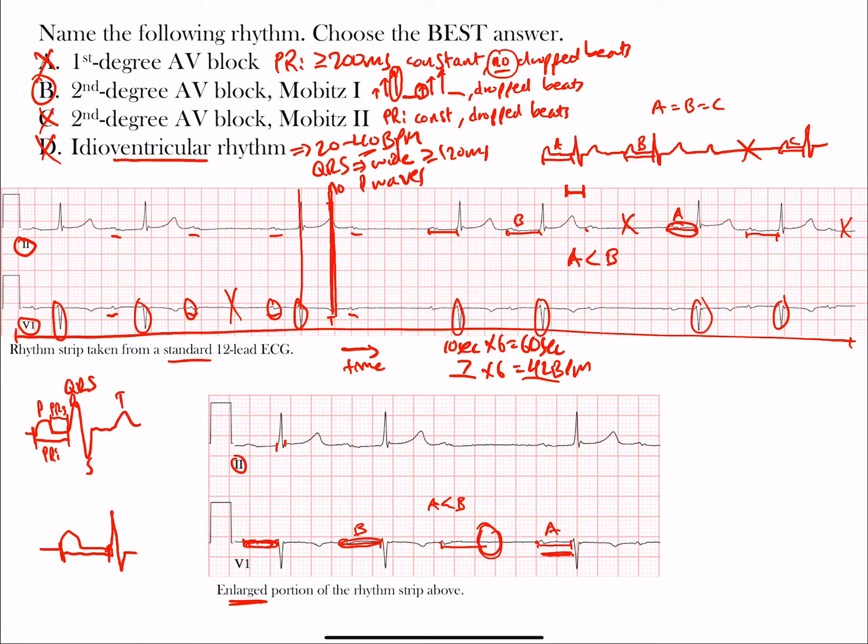When thinking of second degree AV block Mobitz Type 1, remember: longer, longer, longer, drop — that's the Wenckebach pattern. Mobitz Type 1 is also referred to as Wenckebach. So the best choice here is second degree AV block Mobitz Type 1, or Wenckebach. That's the end of this lecture — hope you learned something.